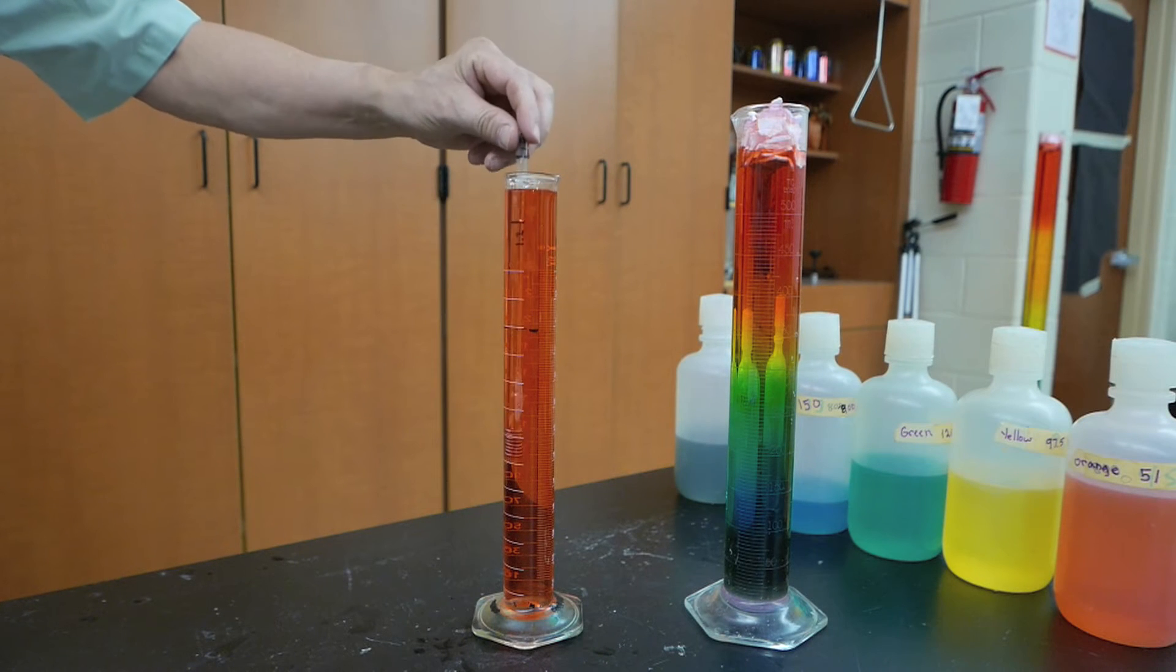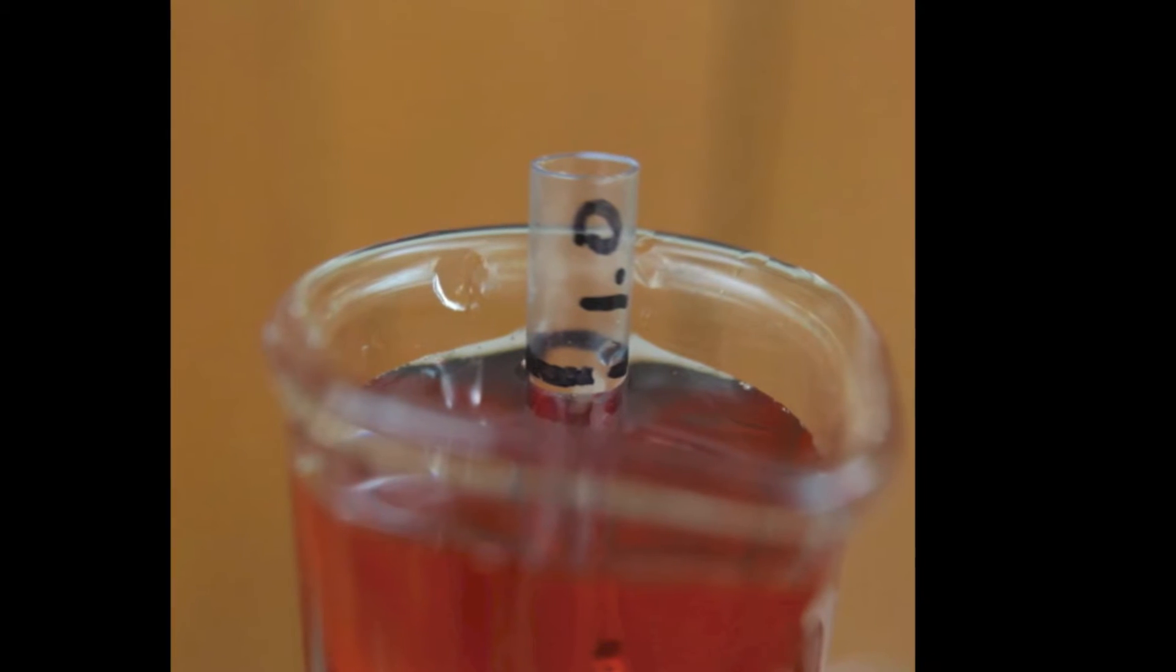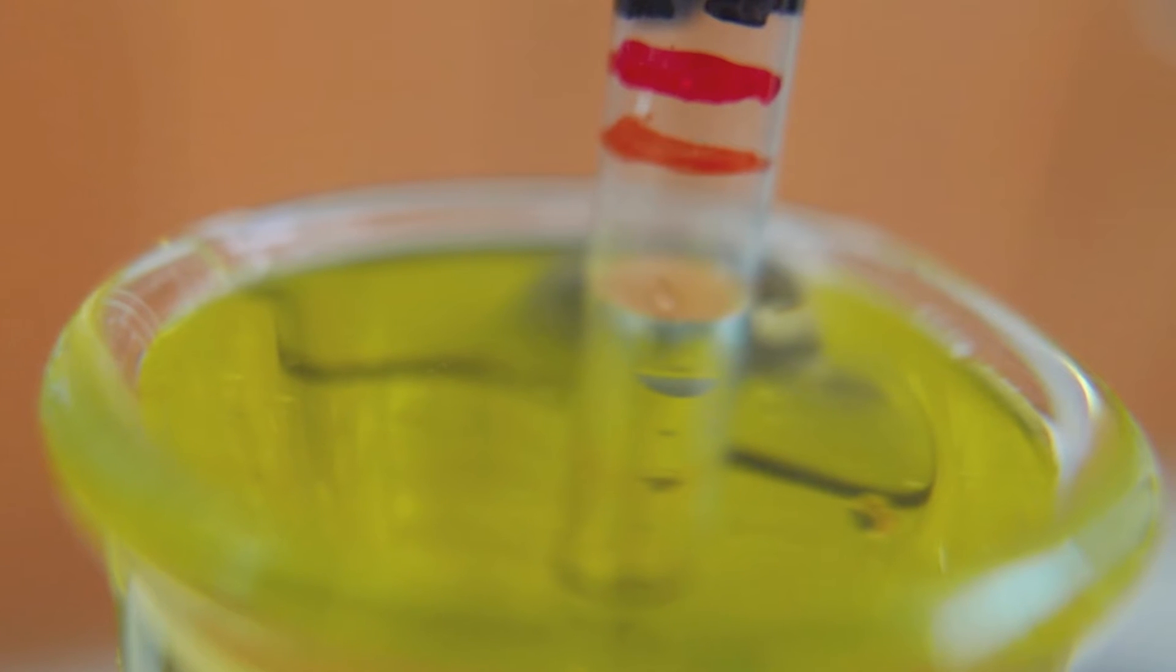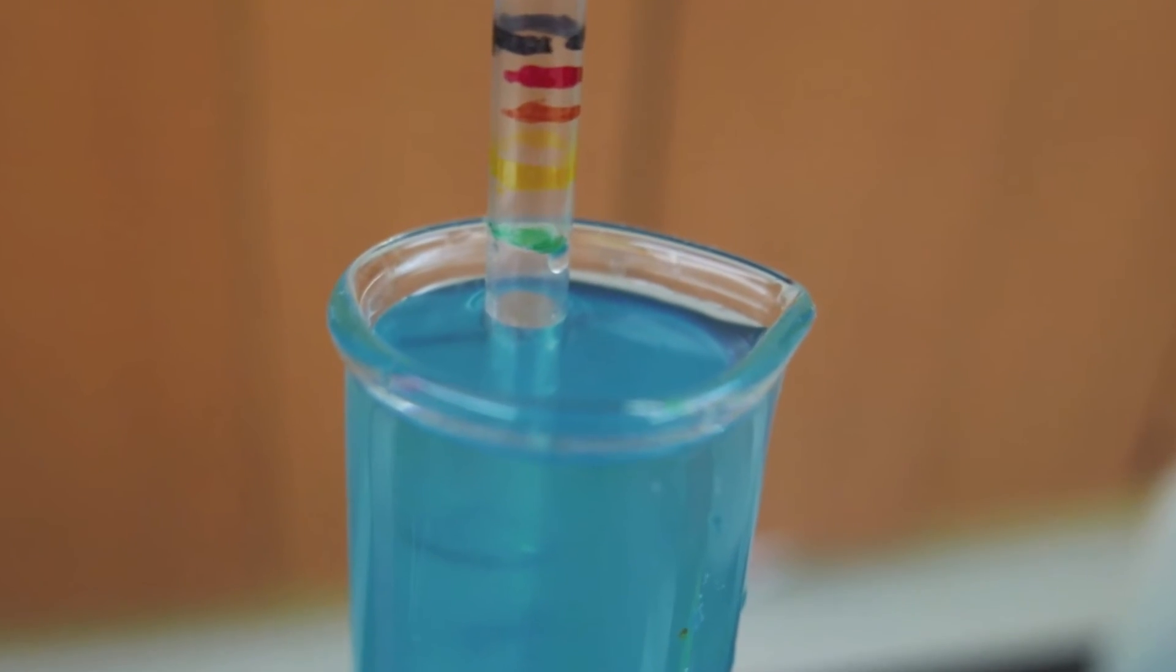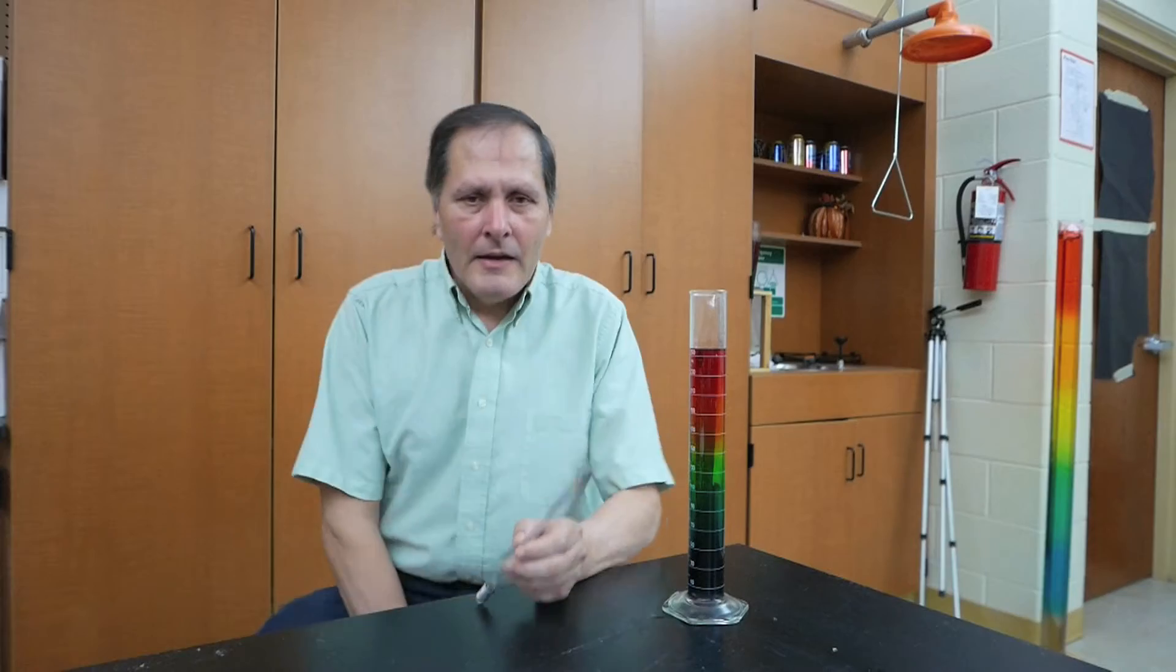I'll stick the hydrometer in each solution and then mark it with the respective color. First the red, then the orange, here's the yellow, the green, the blue, and finally the purple. As we would expect, we can see that the density is increasing as we go down through the colors of the column.